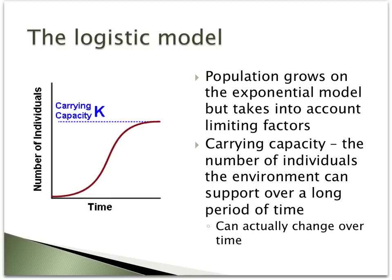Sometimes there are limiting factors that suppress the potential size of a population. The logistic model is a more realistic representation of population growth because it takes into account these limiting factors. Examples of these factors include food or nesting space, which act to keep the population from growing further and further. The largest population that the environment can sustain because of these limiting resources is called a population's carrying capacity. As you can see in the graphic to the left, no population can increase in size forever; however, as the population size comes closer and closer to the carrying capacity, the growth rate or slope of the line begins to level off.